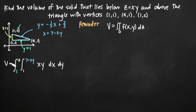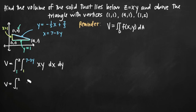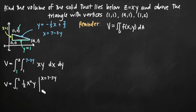Now we evaluate the integral, integrating with respect to x first. We treat x as the variable and y as a constant coefficient. The integral of xy with respect to x gives one-half x squared y by the power rule. We evaluate this on the interval from x equals 1 to x equals 7 minus 3y, being careful to remember we're plugging in values for x, not y.